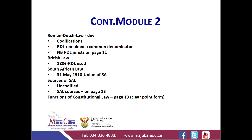You will find the old jurists on page 11 in the gray section. Some of their names are Hugo de Groot, Johannes Voet, Simon van Leeuwen, and Johannes van der Linden. Their work is written in their books, which you will see on page 11.